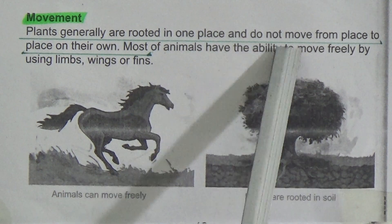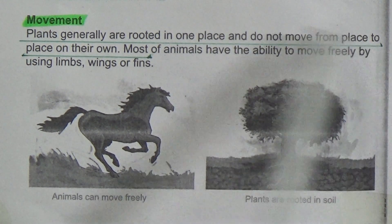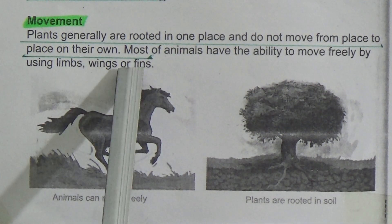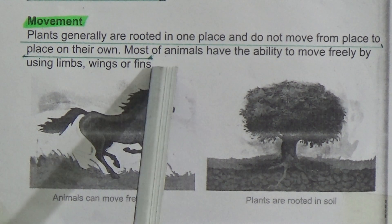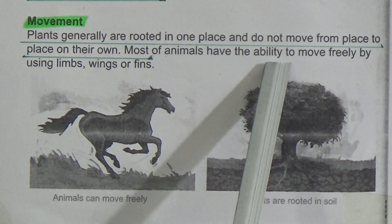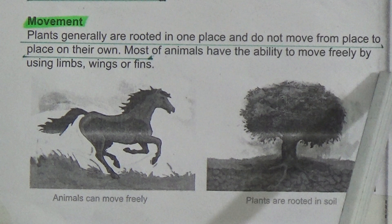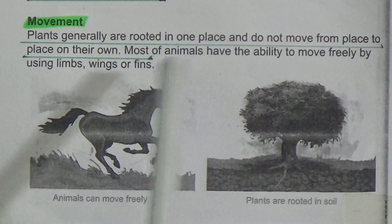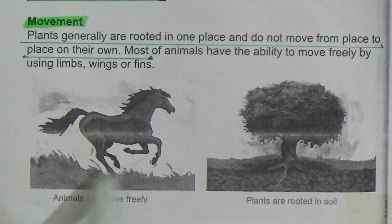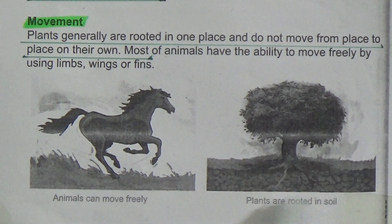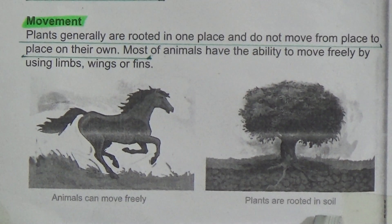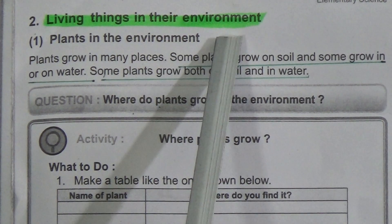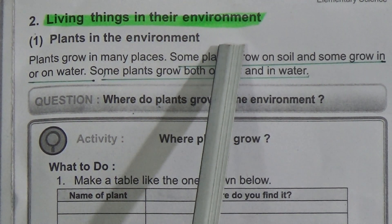Next point: movement. Plants generally are rooted in one place and do not move from place to place on their own — underline this line. Most animals have the ability to move freely by using limbs, wings, or fins. There is a picture showing animals moving freely, and another showing plants rooted in soil.